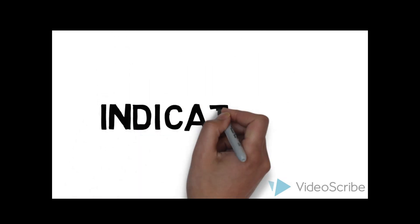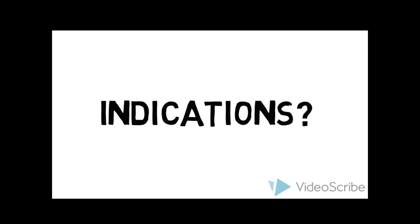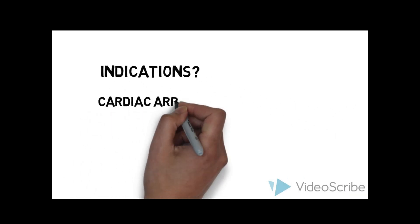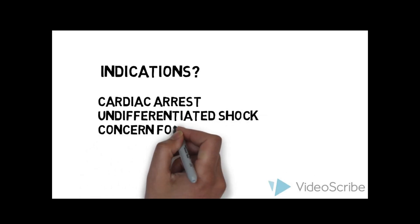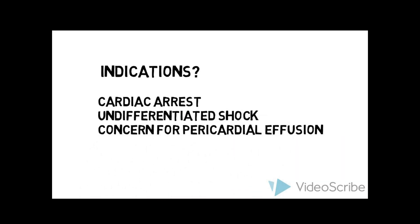The indications for this test include cardiac arrest to look for signs of asystole, undifferentiated shock to look for evidence of obstructive or cardiogenic causes, and if there's a concern for pericardial effusion. This may be present in patients presenting with dyspnea, chest pain, post-MI, or trauma to the chest, back, neck, or upper abdomen. The test is binary, aimed at answering yes or no questions, such as: is there a pericardial effusion, and is the heart contracting normally?